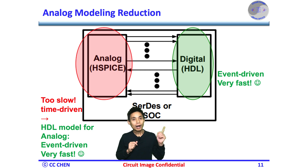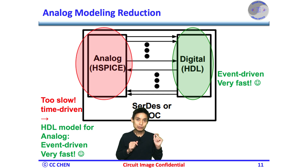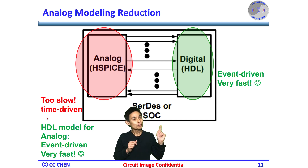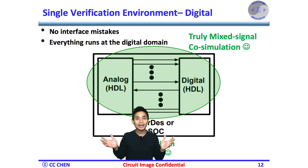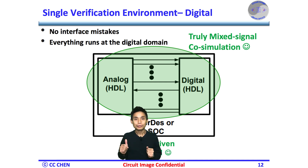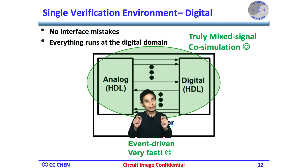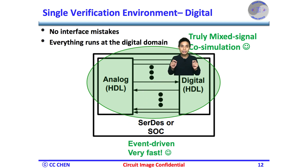Since we know the hardware description language HDL is an event-driven modeling, which can reduce the computation in the static state and reduce the simulation time. With this HDL modeling for the analog block, both digital and analog blocks are modeled through the hardware description language HDL. Therefore, that's a truly mixed signal simulation to reduce the simulation time and connectivity mistakes at the interface.